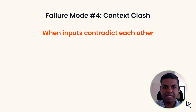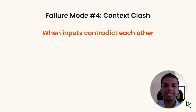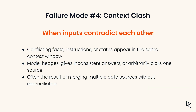Finally, we have context clash. This happens when the context window contains conflicting information — two sources that say opposite things — and the model then guesses and gives inconsistent answers. The remedy is reconciliation: choose trusted sources, apply conflict resolution rules and prune stale state. The context must always represent one consistent view.